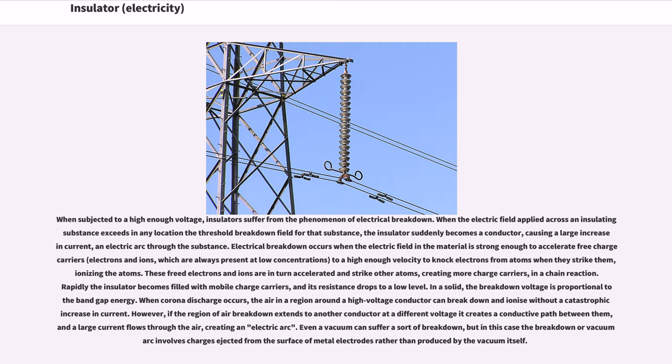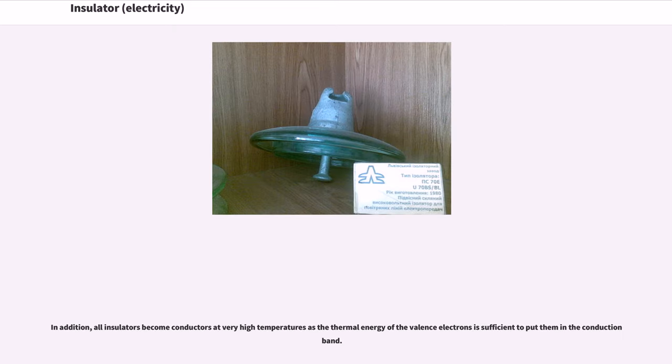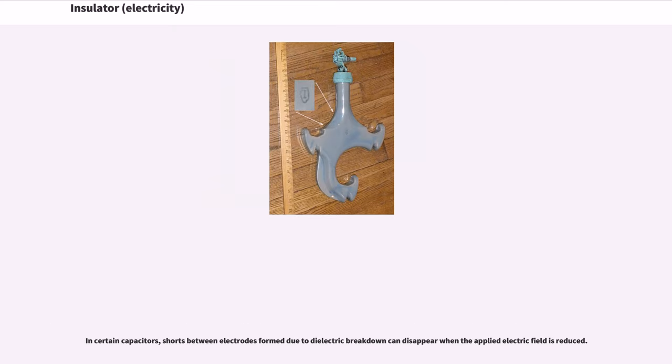Even a vacuum can suffer a sort of breakdown, but in this case the breakdown involves charges ejected from the surface of metal electrodes rather than produced by the vacuum itself. In addition, all insulators become conductors at very high temperatures as the thermal energy of the valence electrons is sufficient to put them in the conduction band.